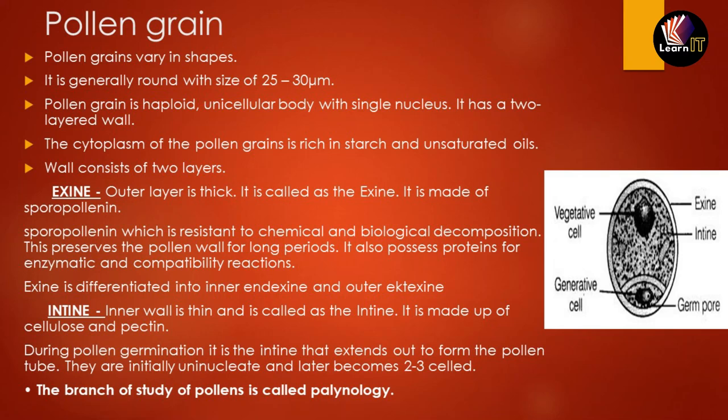The outer exine is thick and is made up of a material known as sporopollenin — a resistant material that protects against chemical and biological decomposition, preserving the pollen wall for a longer period so it can pollinate other plants. The exine is further differentiated into endexine (inner) and ectexine (outer). The inner wall — the intine — is thin and made up of cellulose and pectin, which give it stability and structure.